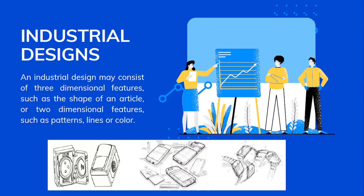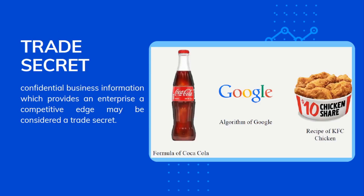Industrial design. An industrial design may consist of three-dimensional features like the shape of an article, or two-dimensional features like patterns, lines, or colors. Next, trade secret. Confidential business information which provides an enterprise a competitive edge may be considered a trade secret — for example, the formula of Coca-Cola, the algorithm of Google, or the recipe of KFC chicken.